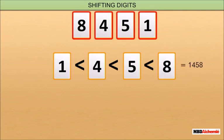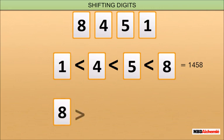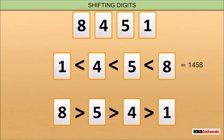Similarly, if we arrange the digits in decreasing order, we get the largest number. So, the largest number is 8541.